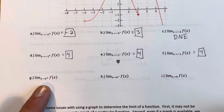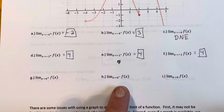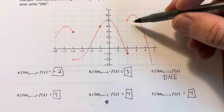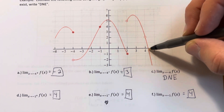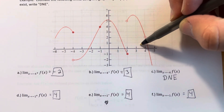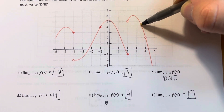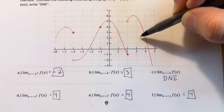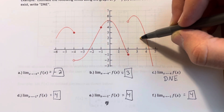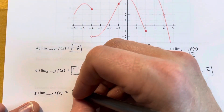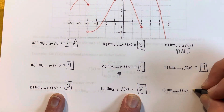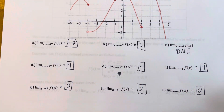One last case: x approaching positive 4. From the right, we're approaching a hole at y equals 2. From the left, the same hole is being approached, also at y equals 2. Both one-sided limits equal 2 — they agree with each other — so the two-sided limit as x approaches 4 is also 2.